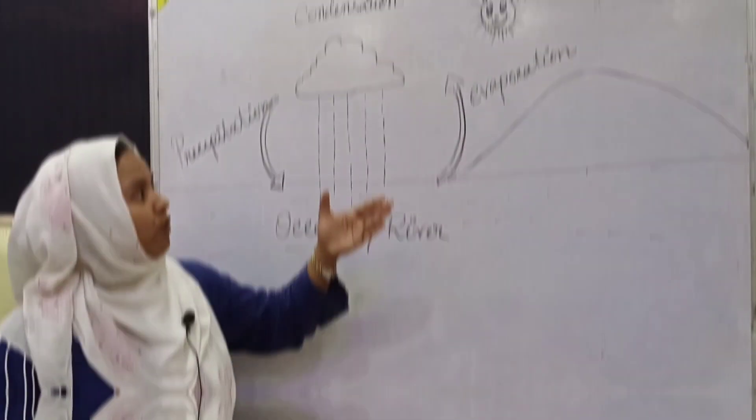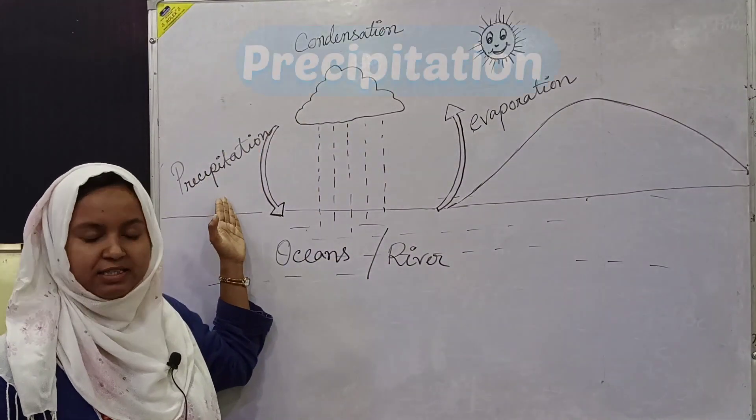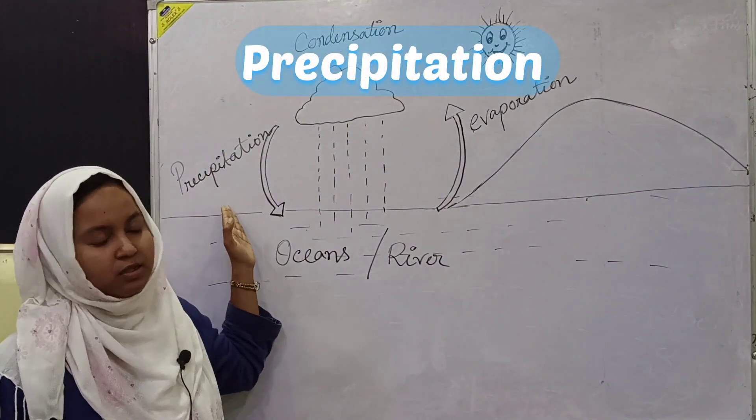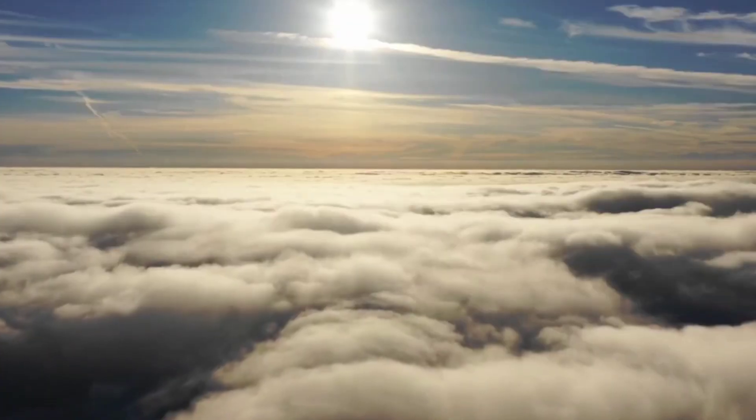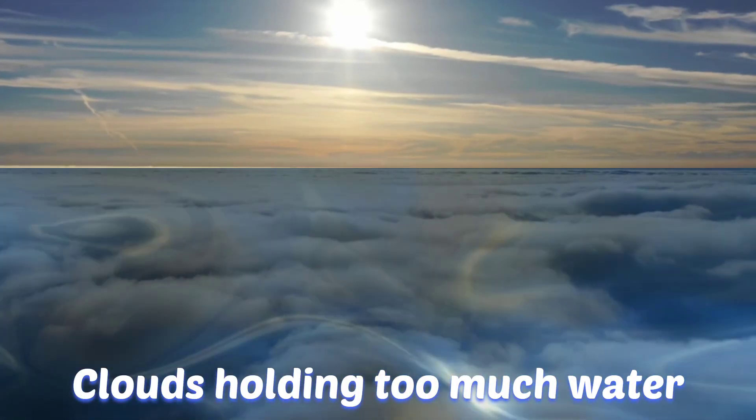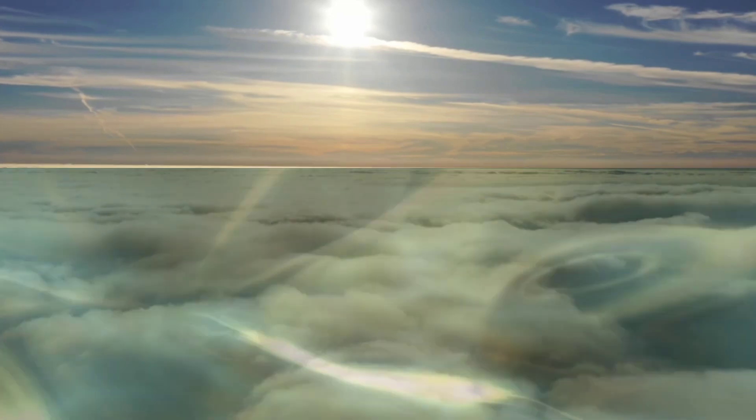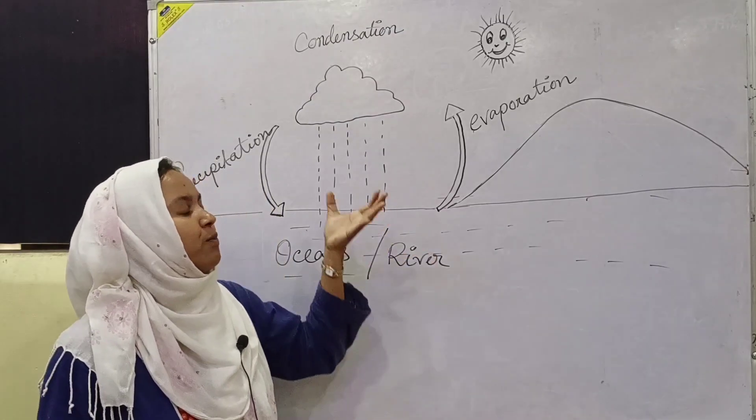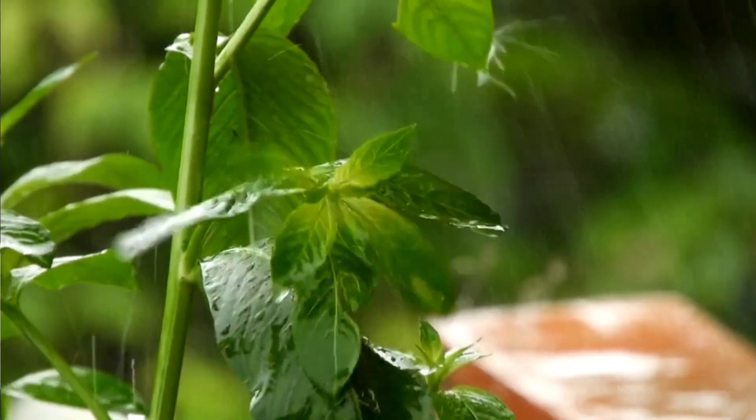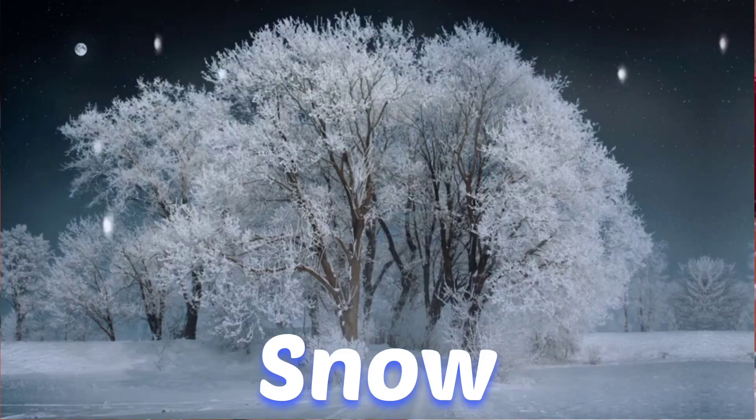Now comes to the third step. That one is precipitation. When clouds are holding too much water, it becomes very heavy. It cannot hold anymore, so it will burst open and rain, hail, and snow fall.